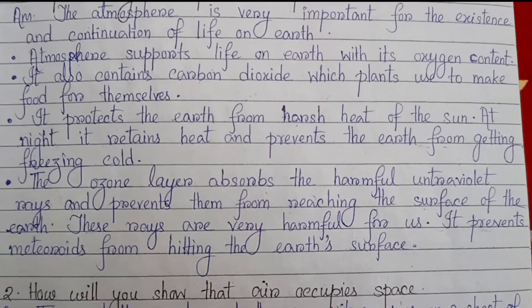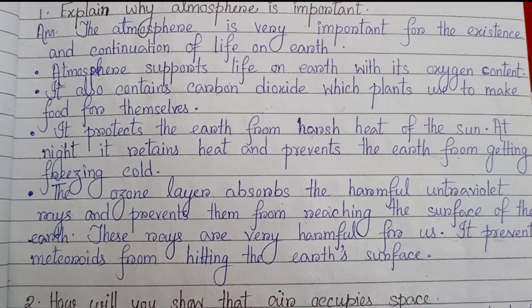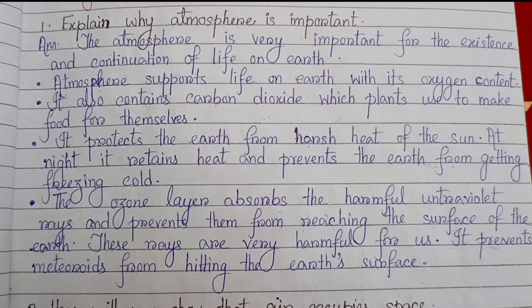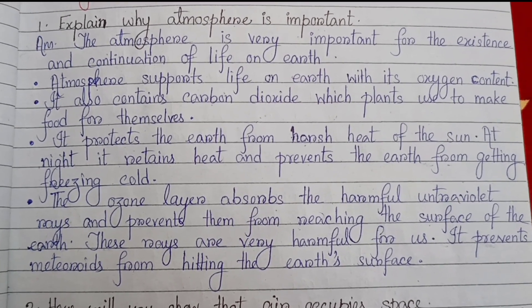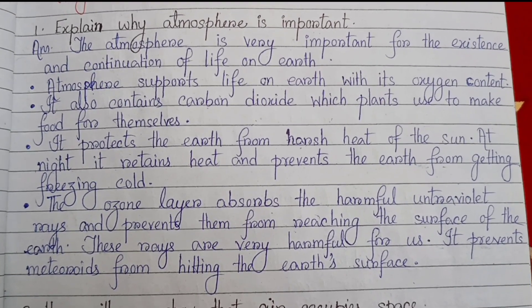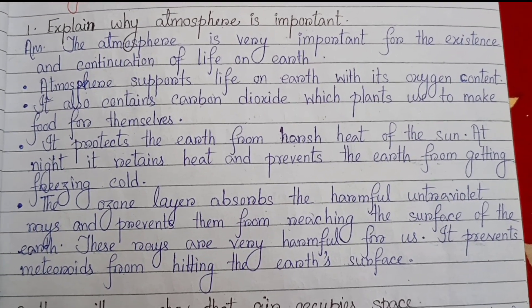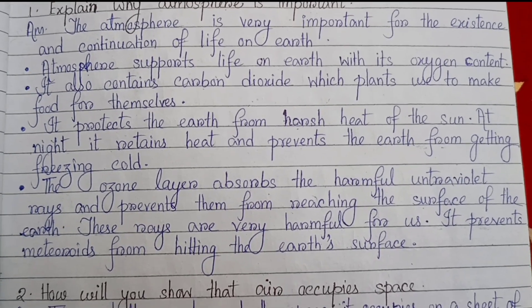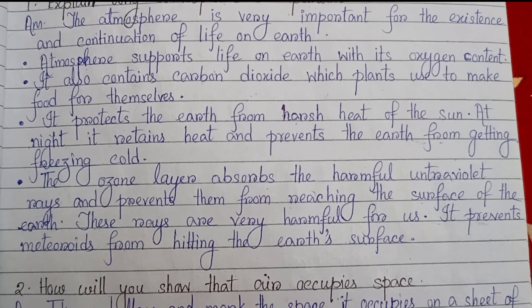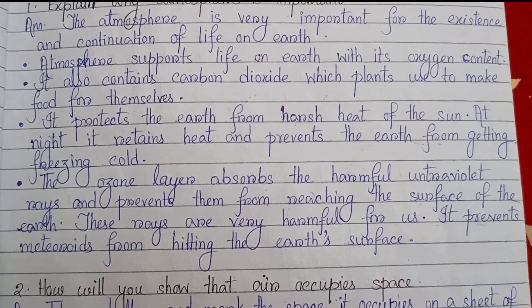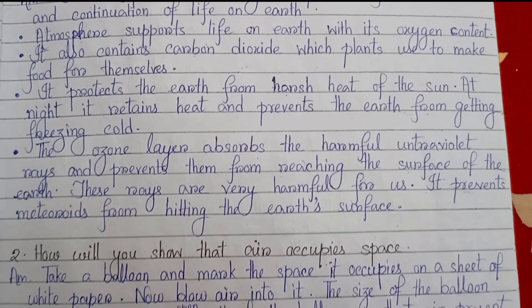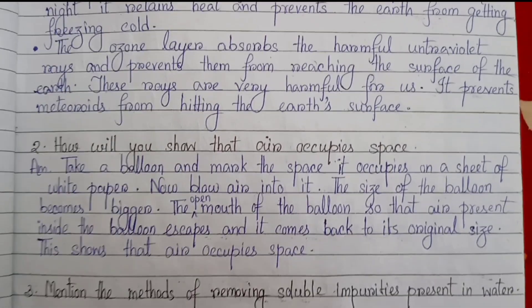The ozone layer absorbs the harmful ultraviolet rays and prevents them from reaching the surface of the earth. These rays are very harmful for us. It also prevents meteorites from hitting the earth's surface.